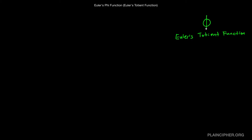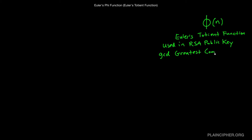This is the Greek letter phi, and we apply it to integers, so n would be a positive integer. As I said, Euler's phi function is used in the RSA public key encryption algorithm. Before I tell you what it does, let's get some basic mathematical terminology out of the way. You might have heard of GCD before — GCD stands for greatest common divisor.